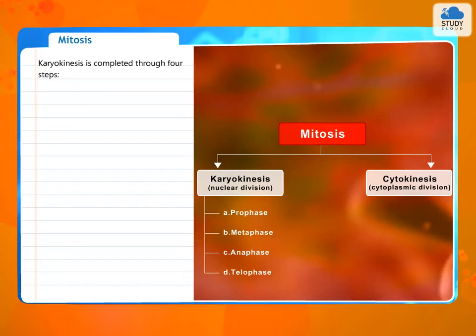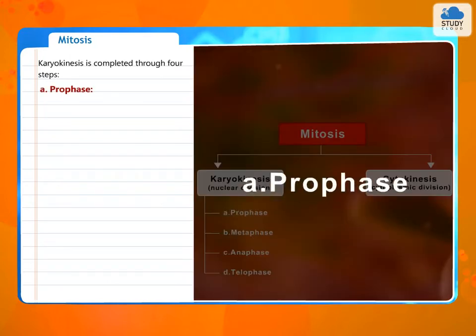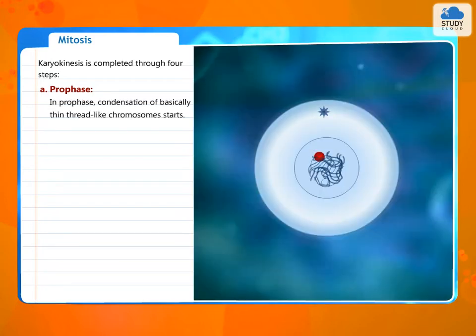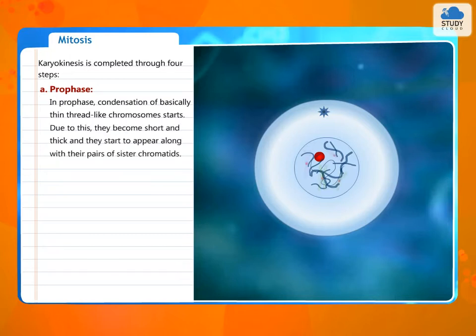Karyokinesis is completed through four steps. A. Prophase. In prophase, condensation of basically thin thread-like chromosomes starts. Due to this, they become short and thick and they start to appear along with their pair of sister chromatids.